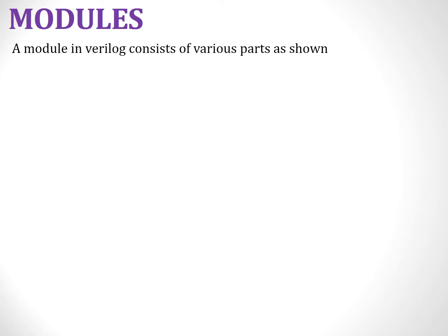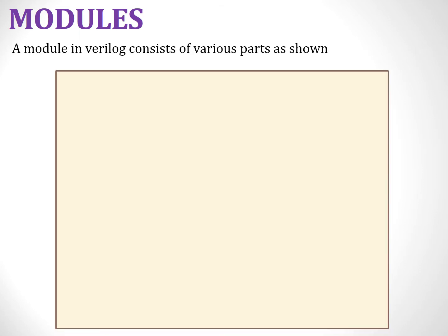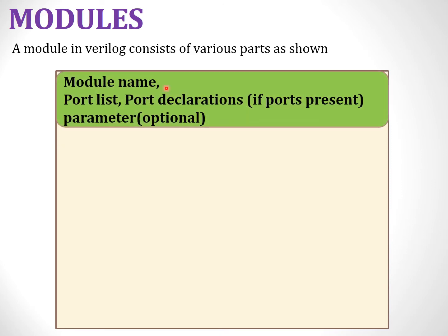We know that a module is the basic building block of a Verilog HDL code. This module consists of various parts. Every module declared must have a module name, which is an identifier or a user-defined variable, followed by a port list — a list of all the input and output port variables. All ports listed must be declared as either an input, output, or in-out port. The module can also contain a parameter definition for constants, but this is optional.